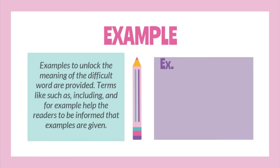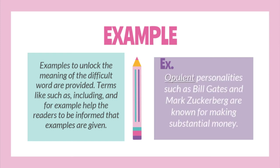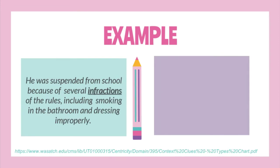Now let's proceed to example as a context clue. Examples to unlock the meaning of a difficult word are provided. Terms like 'such as,' 'including,' and 'for example' help readers know that examples are given. For example, 'Opulent personalities such as Bill Gates and Mark Zuckerberg are known for making substantial money.' Their names are examples of opulent, or rich, individuals. Also, 'He was suspended from school because of several infractions of the rules, including smoking in the bathroom and dressing improperly.' Smoking and dressing improperly are examples of infractions, which means violations.